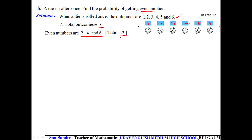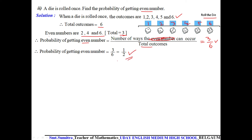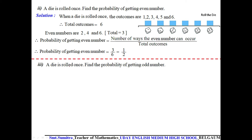Now find P(even number) using the formula: number of ways an even number can occur divided by total number of outcomes = 3 divided by 6. After simplification, the answer is 1/2. So the probability of getting an even number when rolling a die is 1/2.